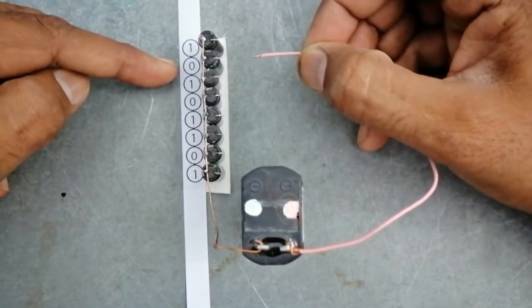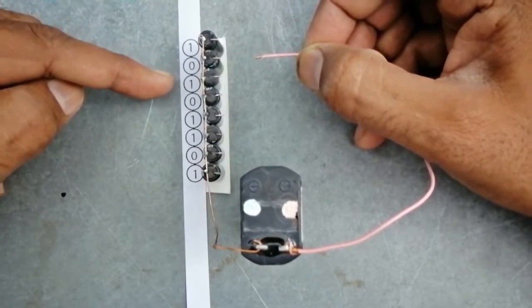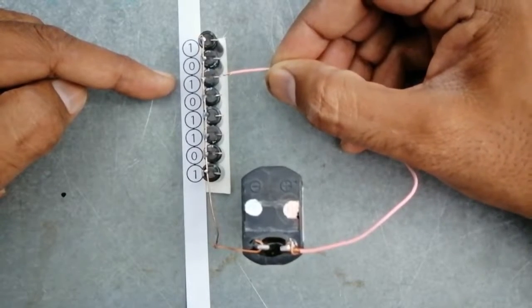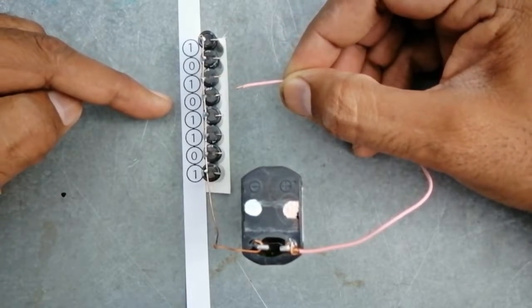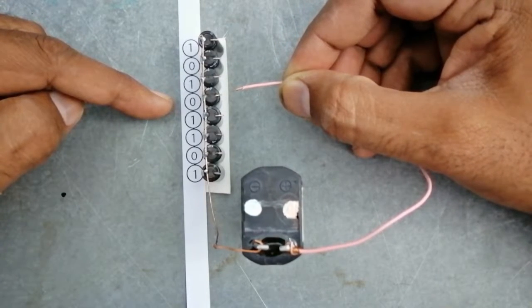The next value is zero so we don't charge the next capacitor. The next bit is one so we will charge the capacitor. The next bit consists of zero so we will not charge it.